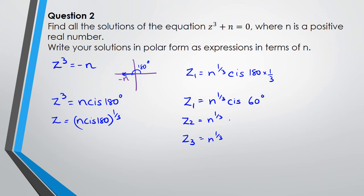Which means our second root is going to be n^(1/3) cis 180 degrees, and the final one is going to be at 300 degrees. And those are basically our three roots, expressed in polar form.